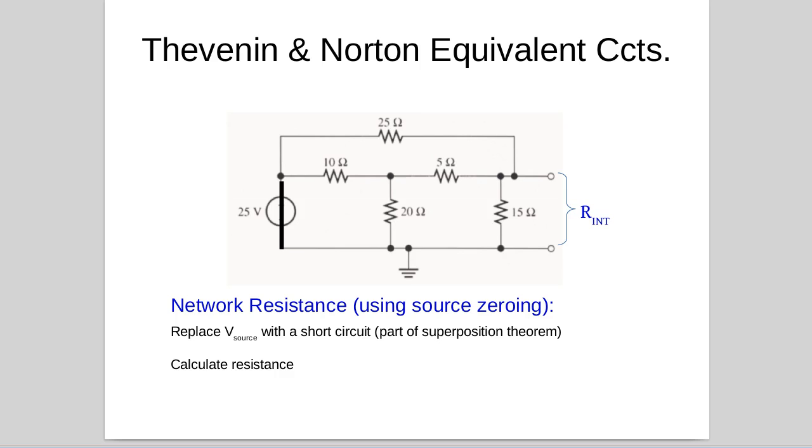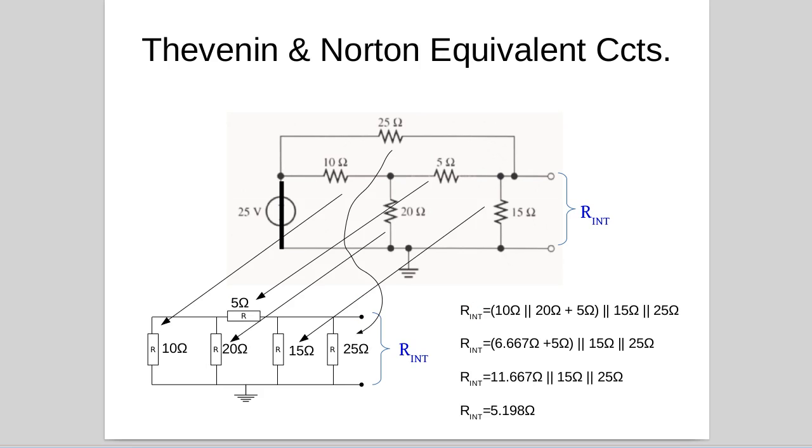Now to understand this network we need to redraw it because if you look carefully now the 25 ohm, as you'll see at one end it's connected to the top wire and via the short circuit at the left hand end it's connected to the bottom wire so it's directly in parallel to the 15 ohm. If you look at the 10 ohm its left hand end is now connected to the bottom wire so it's directly in parallel to the 20 ohm. So we can redraw this. So look at that carefully, you might want to stop this video and come back and have a look at that.